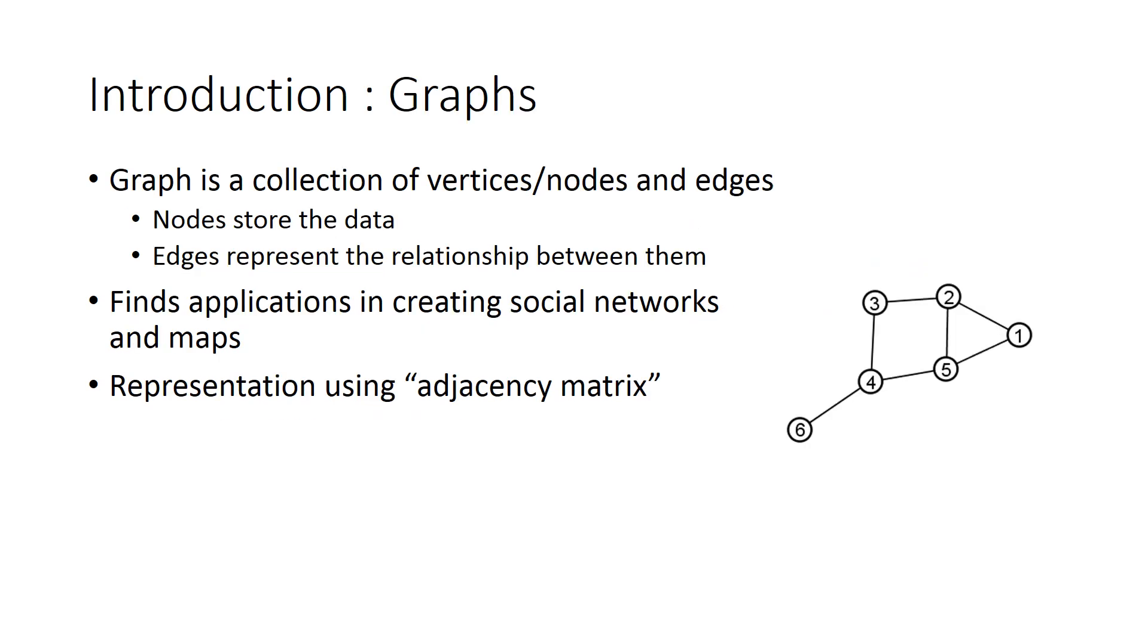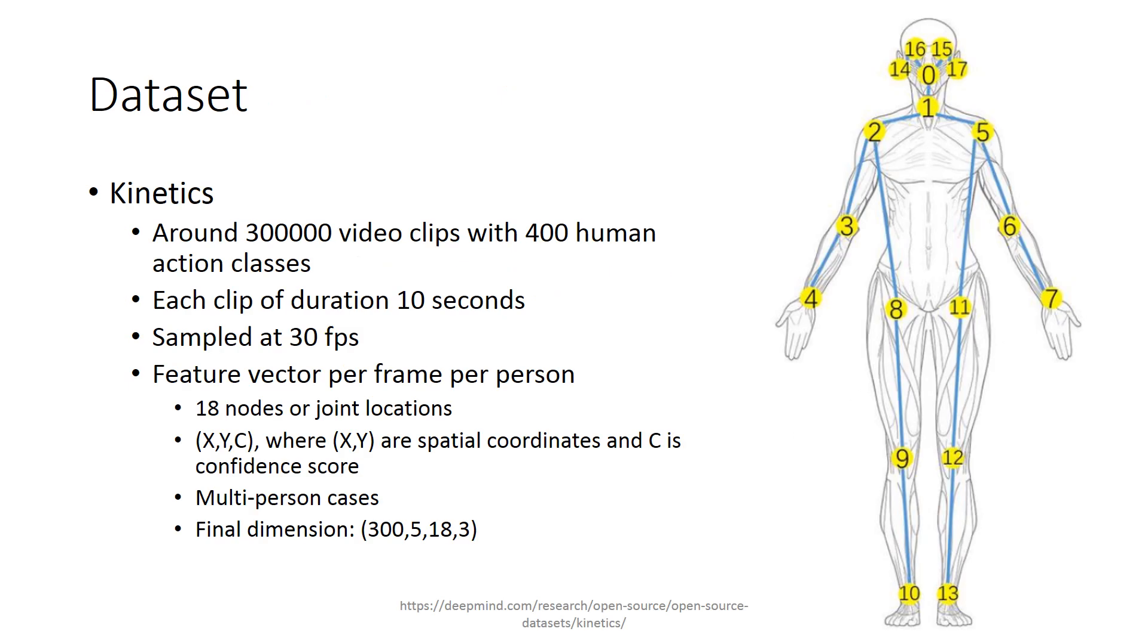Coming on to graphs. Graph is a collection of nodes and edges used in various real-world applications. The nodes and edges provide a data relationship which can be represented using an adjacency matrix. The image on the right-hand side represents the body joints. The joints are represented as nodes in the graph and the bones are represented as the edges.